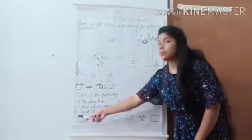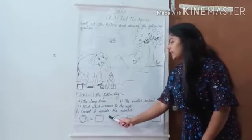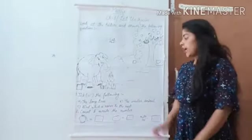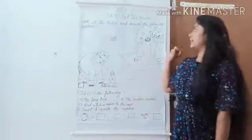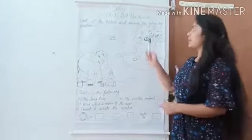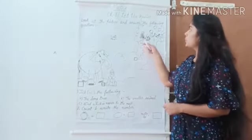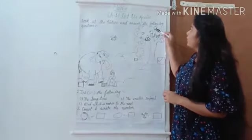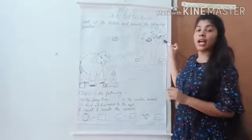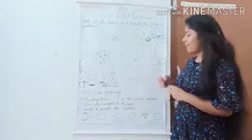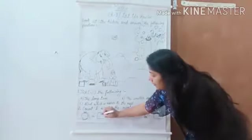Question number 2, that is count and write the number. We have to count in this picture how many mangoes are given. So, let us count. 1, 2, 3, 4, 5, 6 and 7. How many mangoes? 7. Very good. Write 7 over here.